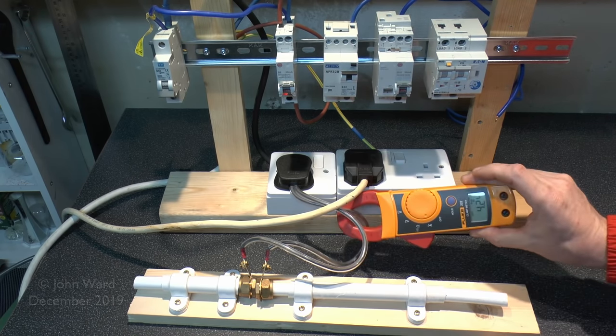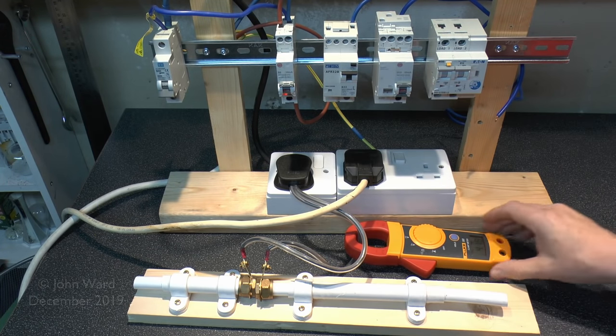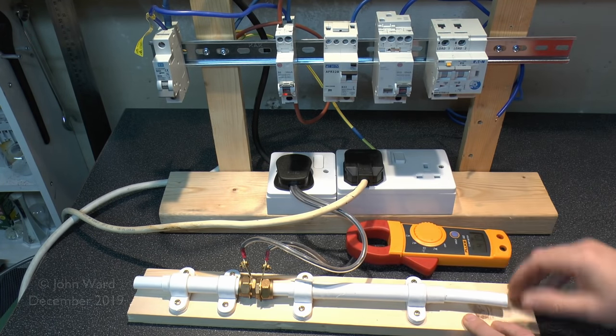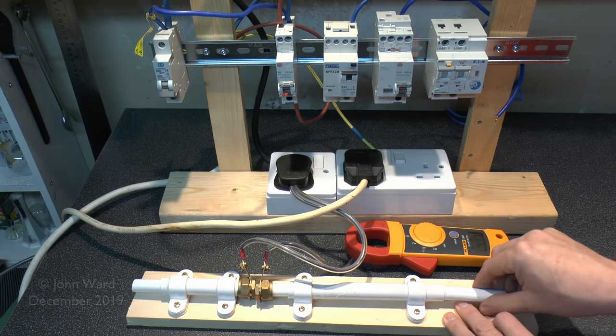So current turned up there, so 4.2 amps there. If anyone notices, this is only a 6-amp circuit breaker, so that's sort of two-thirds of the way to its maximum rating. Let's try that one.